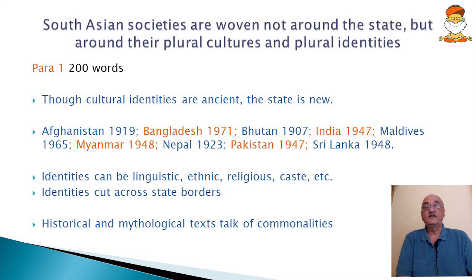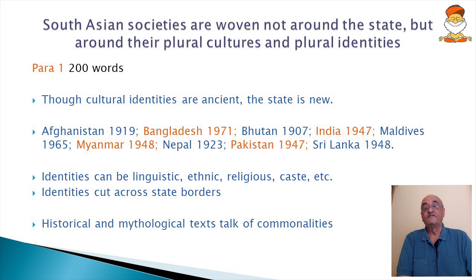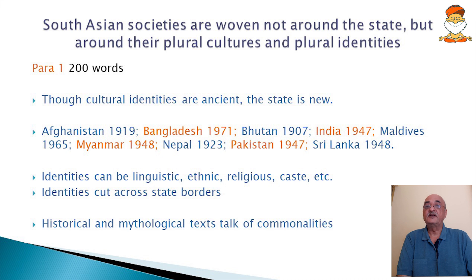When we talk about plural identities, they can be linguistic — multiple linguistic groups in this region. They can be ethnic, starting from the Aryan and Dravidian. Religion — almost every religion on earth is represented here. Caste is a peculiar feature, essentially starting as a Vedic Hindu concept. Many identities cut across state borders — Bangladesh is an Islamic country but essentially Bengali, sharing much with West Bengal. The Punjab parts of Pakistan and India have huge cultural commonality, as do Tamils in Tamil Nadu and Sri Lanka.